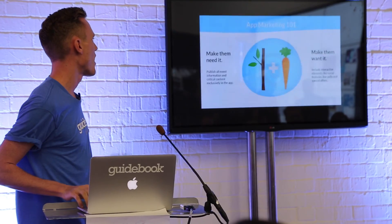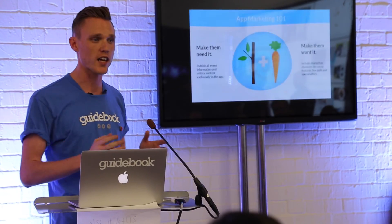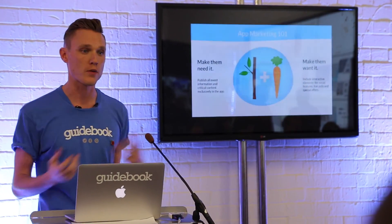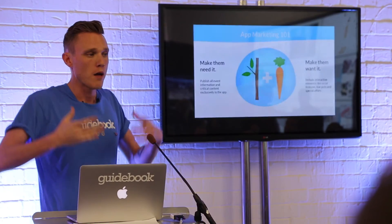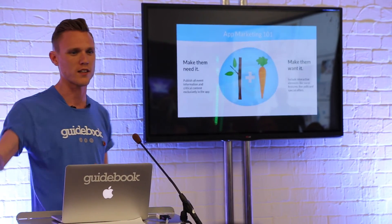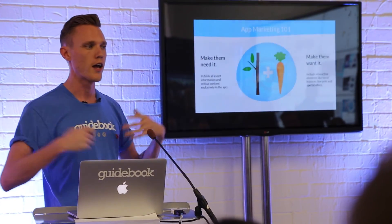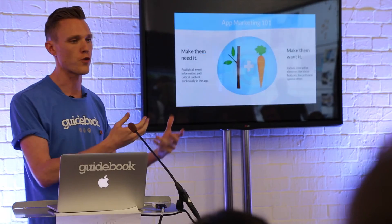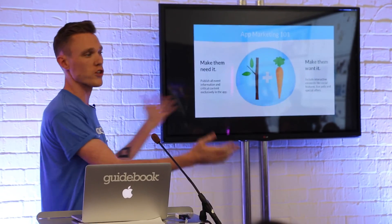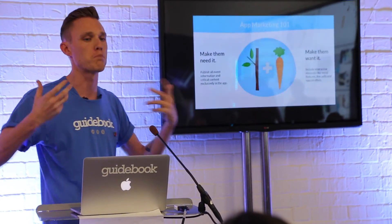App marketing 101 — carrot and the stick. The stick: make them need it. Have app-exclusive content that only people with the app can access, send messages and reminders, and make it so people at the event are saying to their friends, 'You don't have the app? Why not?' The carrot: make them want it. Give them social features — a Twitter feed, the ability to tweet through the app, and live polls during sessions so the speaker can ask what everyone thinks and they can vote through the app.